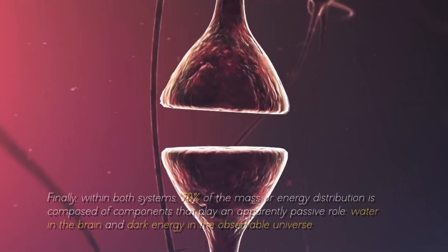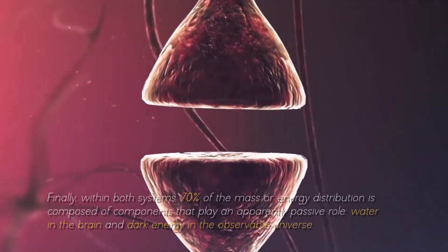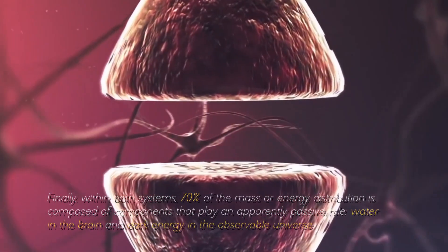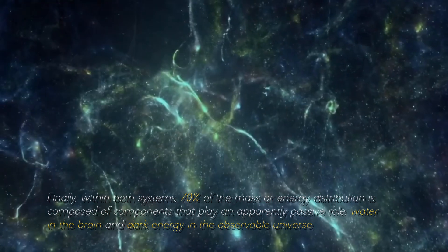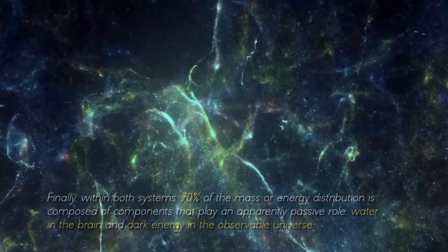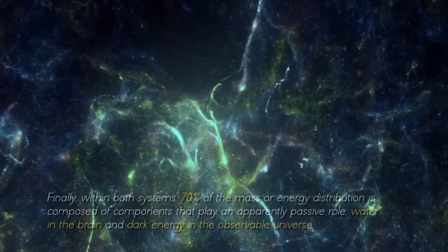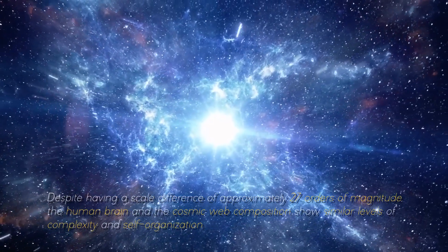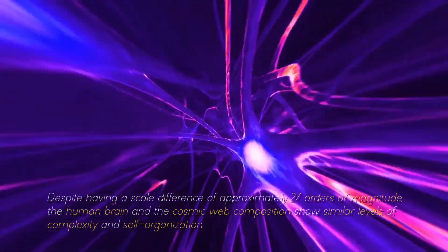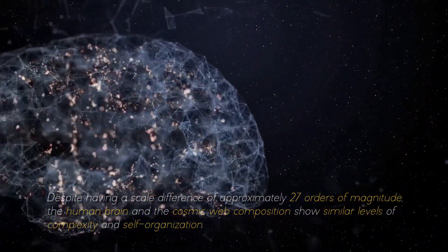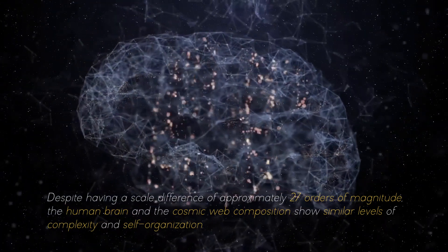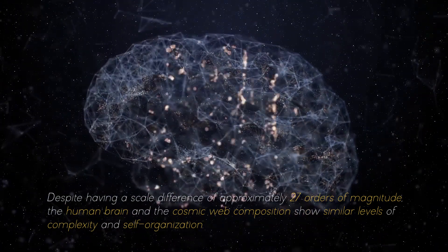Finally, within both systems, 70% of the mass or energy distribution is composed of components that play an apparently passive role, water in the brain and dark energy in the observable universe. Despite having a scale difference of approximately 7 orders of magnitude, the brain and the cosmic web composition show similar levels of complexity and self-organization.